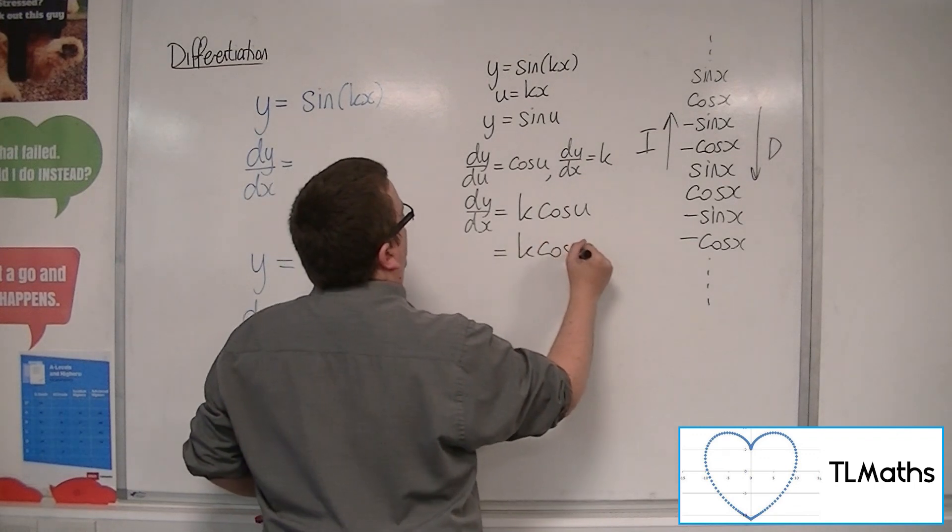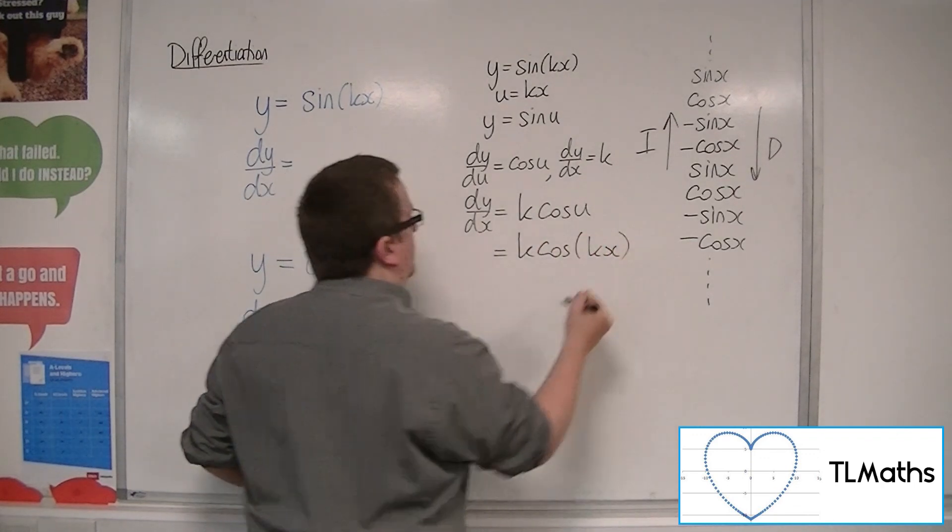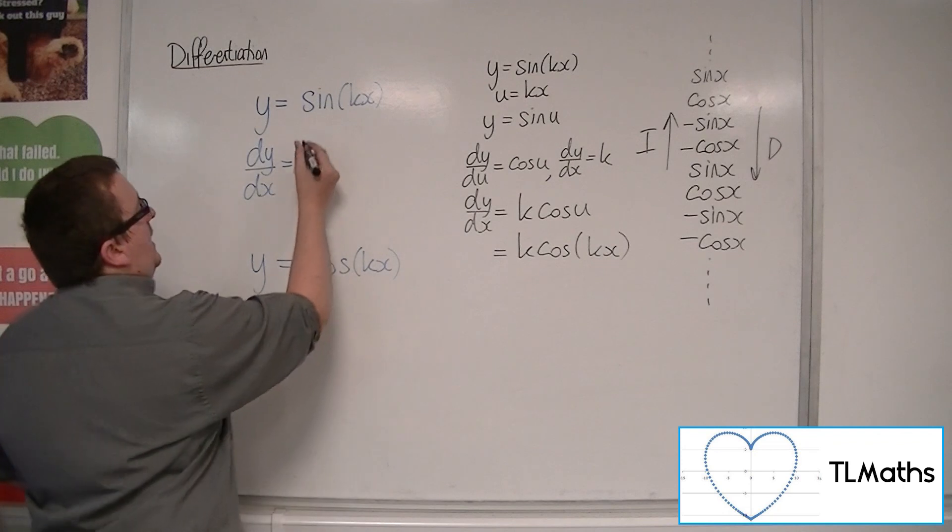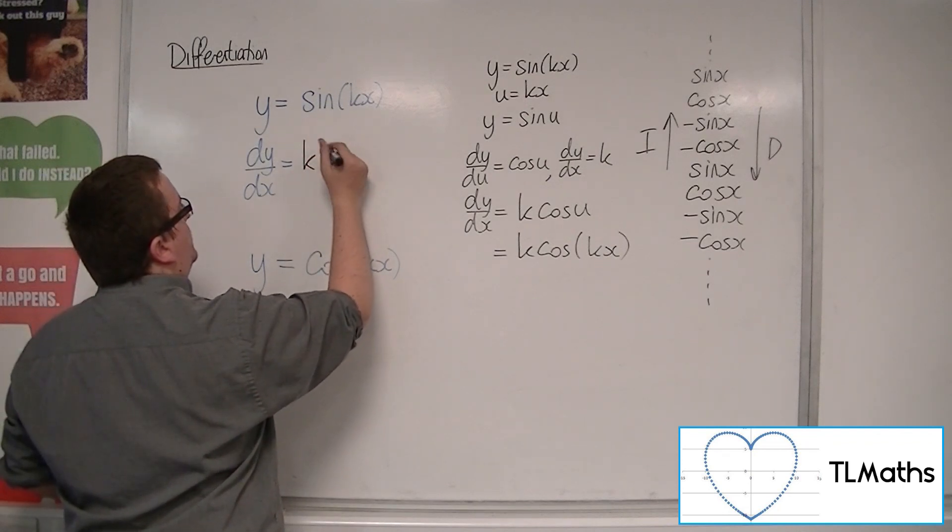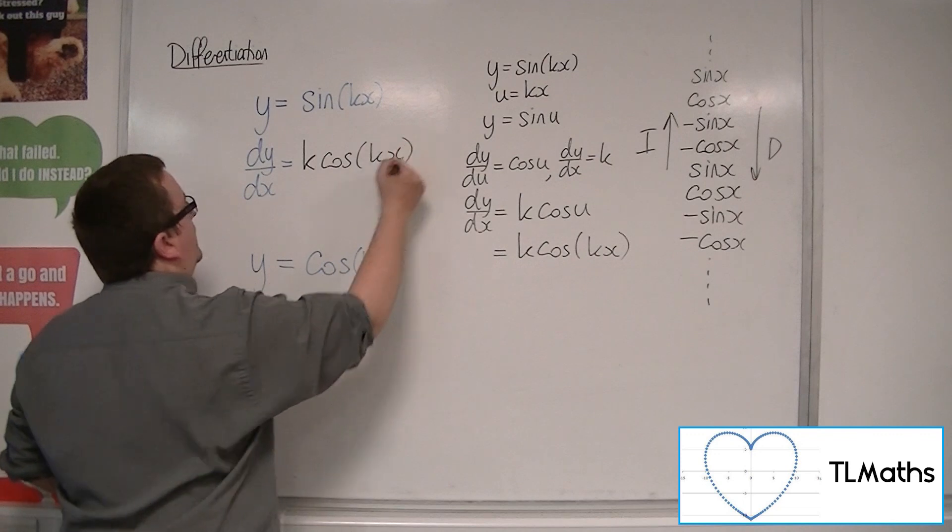And u was just kx. So sine of kx differentiates to k cosine of kx.